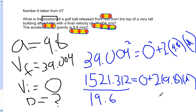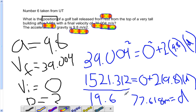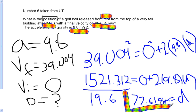So that will equal 77.618 approximately, this is rounded, meters. And that will equal D. And that is your final solution. 77.618 meters.